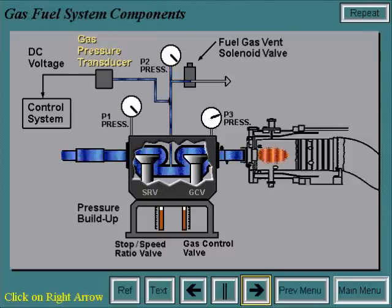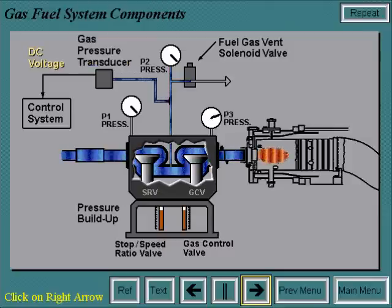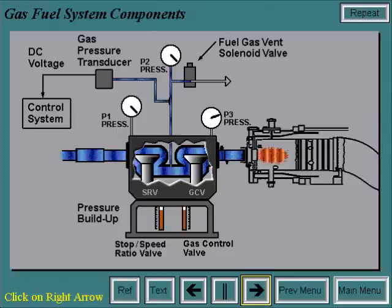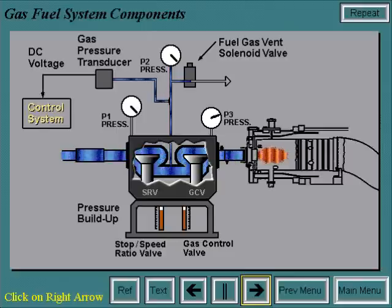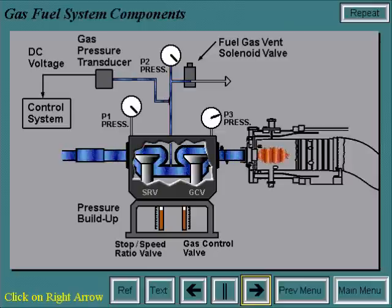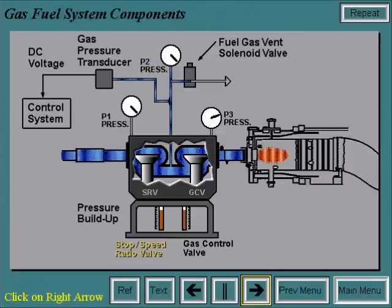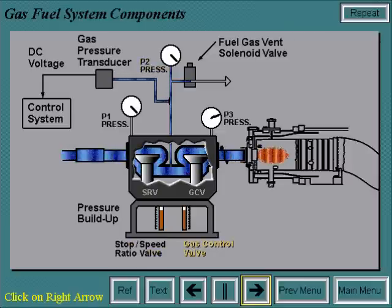The fuel gas pressure transducer has a DC voltage output directly proportional to pressure input in PSIG. This transducer provides the control system with a feedback signal for the operational fuel gas pressure, or P2 pressure, between the stop speed ratio and gas control valves.